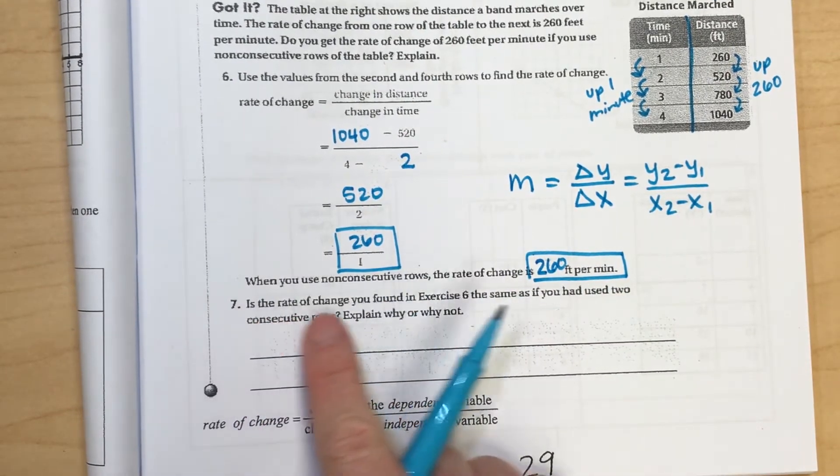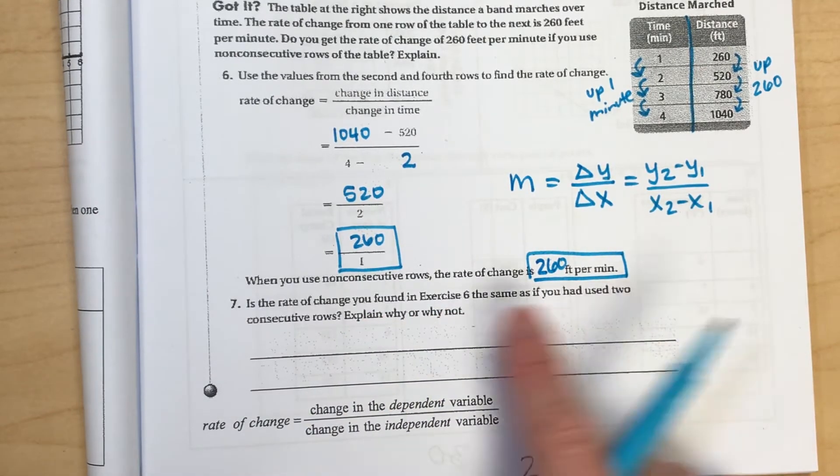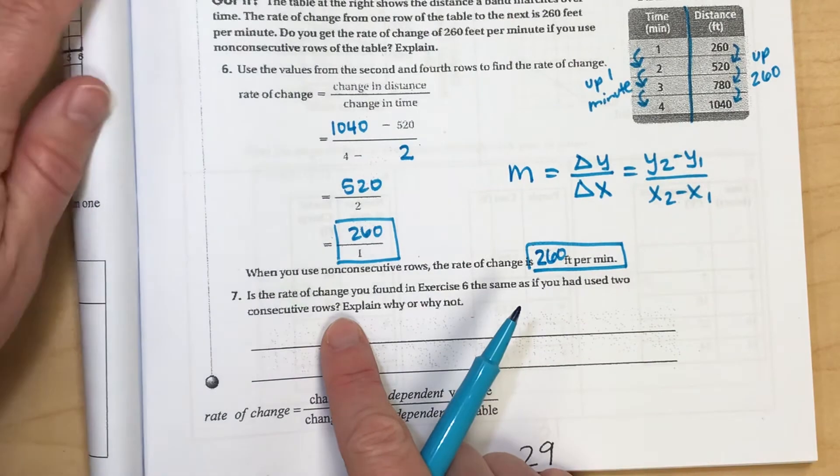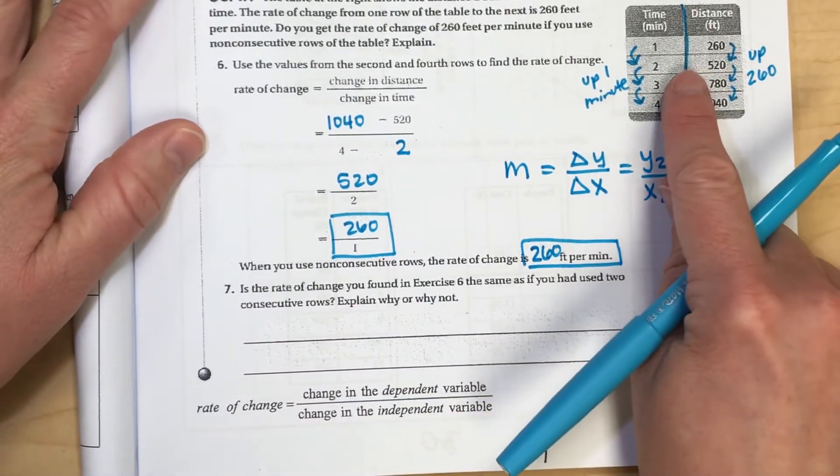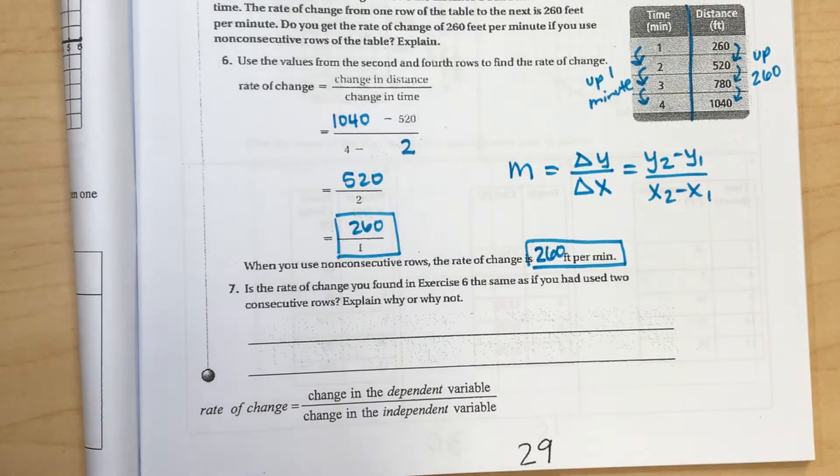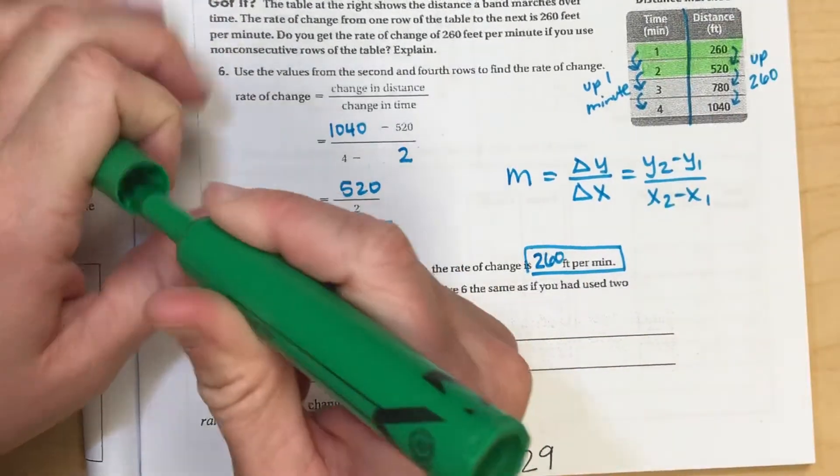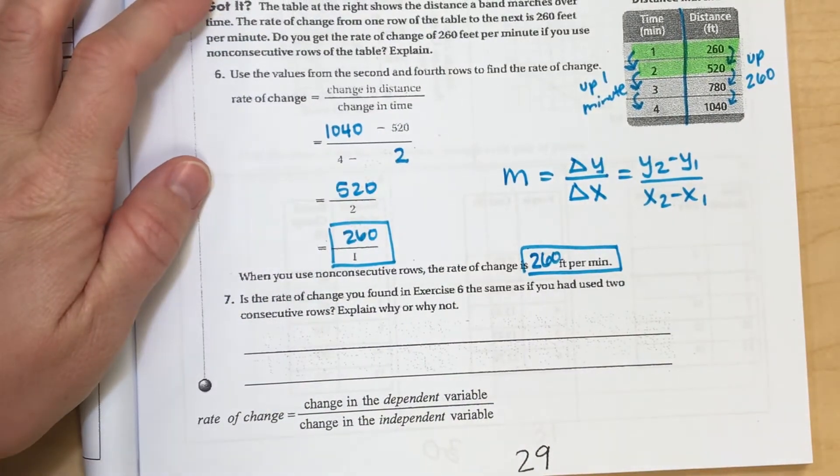Number seven here says, is the rate of change you found in exercise six the same as if you had used two consecutive rows? Well, let's actually try that out. So pick two points in the table that are right next to one another. I'm going to highlight mine to just kind of make it easier. And I'm going to use the first two points. And if I do that, this would be my slope formula.